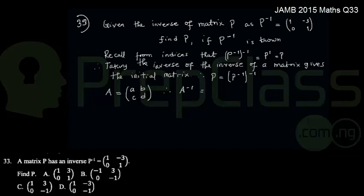The inverse of matrix A would be the adjoint of A over the determinant of A. The adjoint of matrix A has a pattern. The elements A and D, the elements on the leading diagonal, will be interchanged. So I'll have D, A.